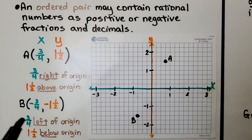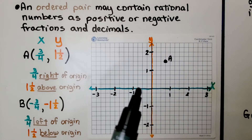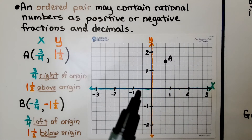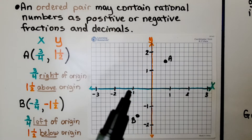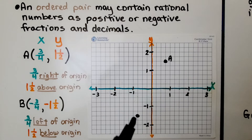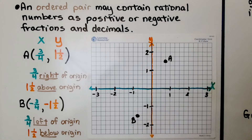Point B is at negative three-fourths, so we go left of the origin: one-fourth, two-fourths, three-fourths. The y value is negative one-and-a-half, so we go down to between negative one and negative two — that's negative one-and-a-half, below the origin.